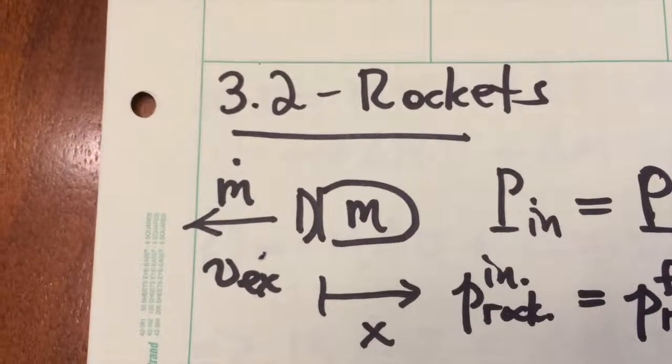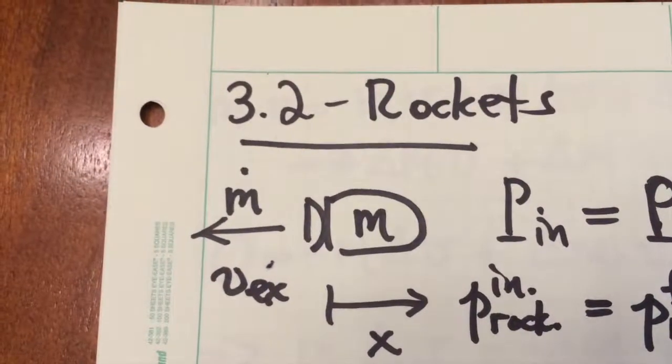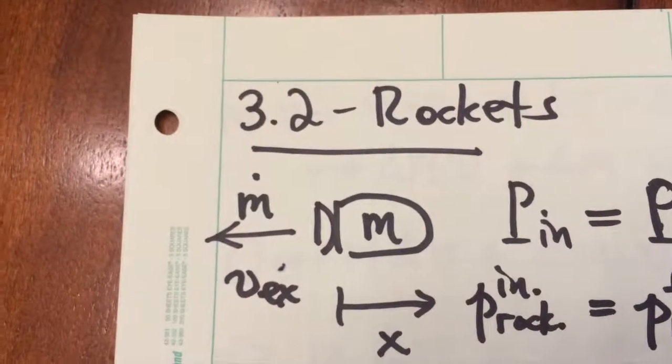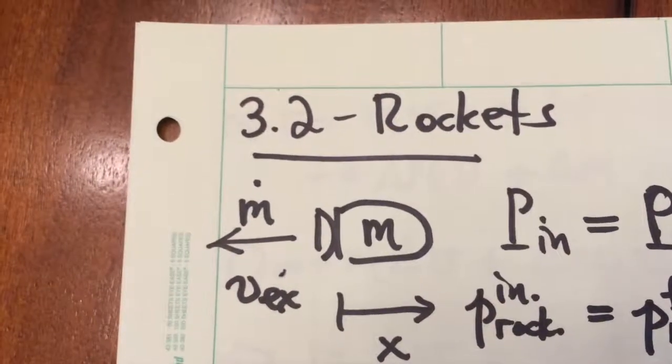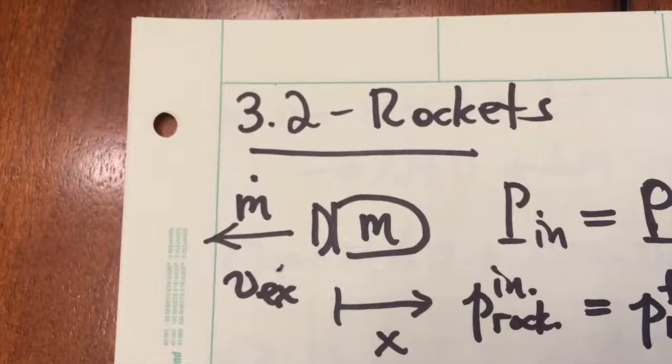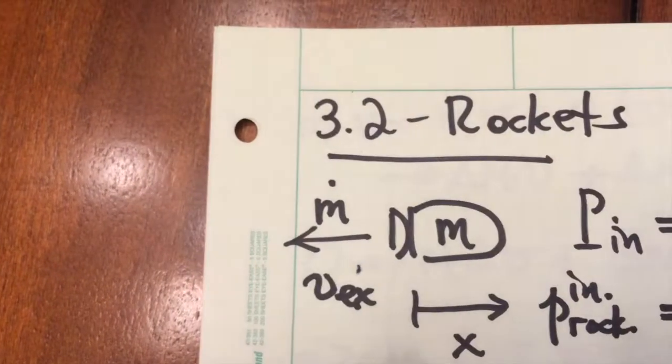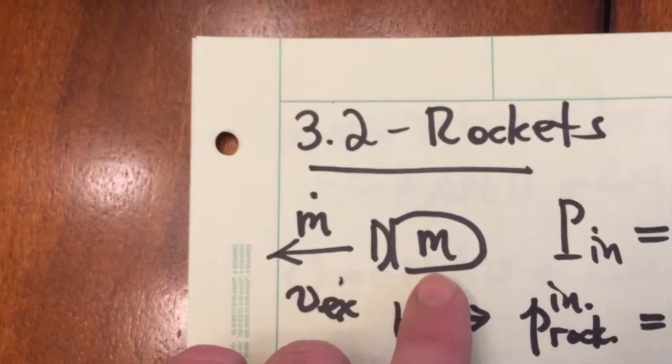Another beautiful example where conservation of momentum is a very powerful tool is analyzing the dynamics of a rocket. As we've already discussed, a rocket is propelled by ejecting material out the back end. So here, for example, we have a rocket of mass m.